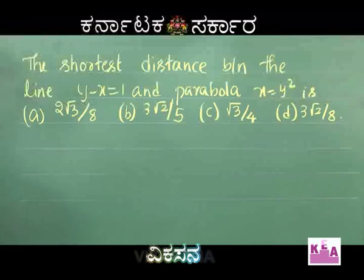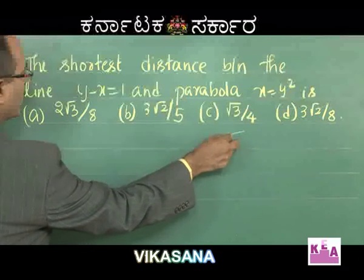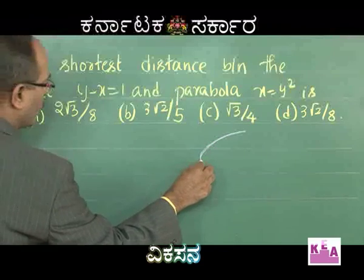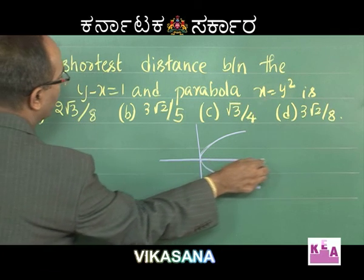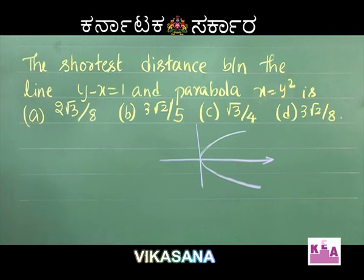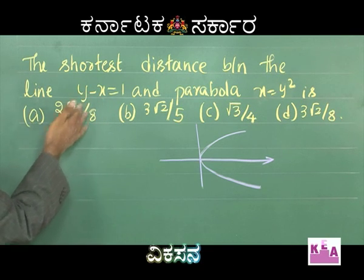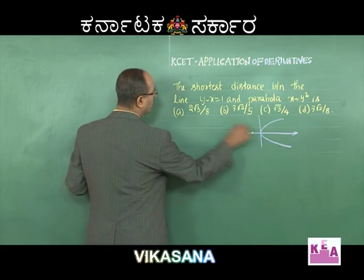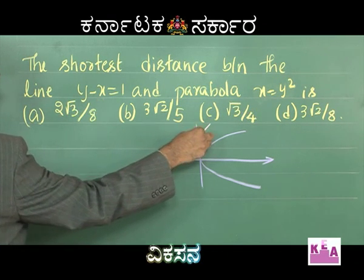The parabola x = y² is the same as y = √x. So y = x² is a parabola like this. The line y − x = 1 in intercept form is x/(−1) + y/1 = 1.